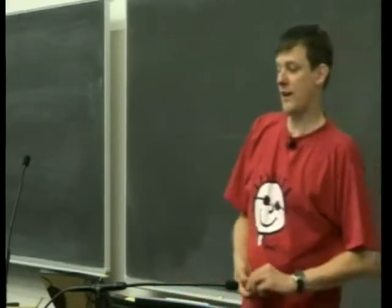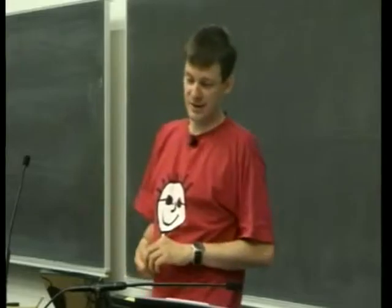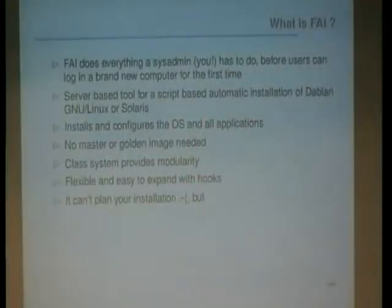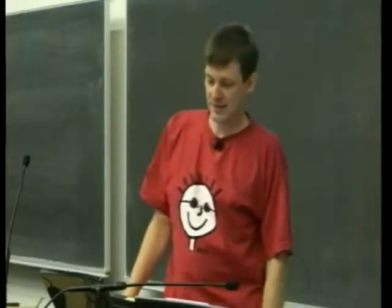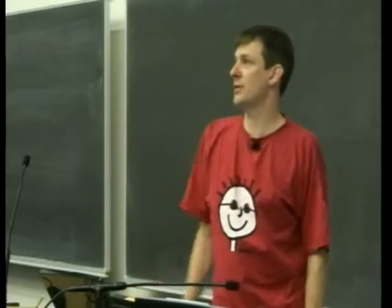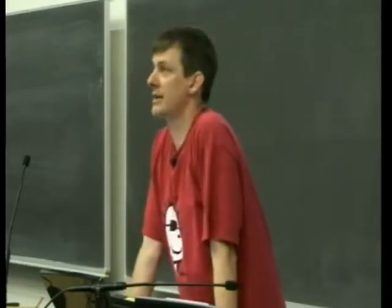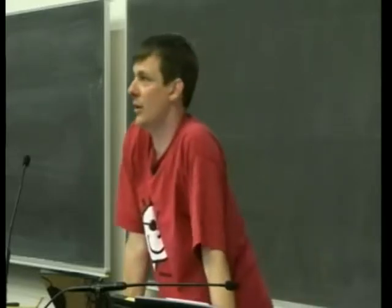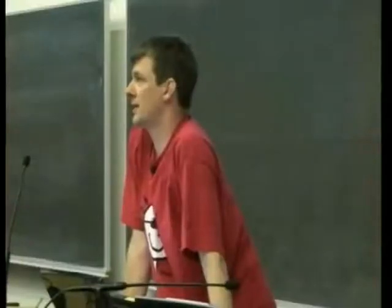What is FAI? FAI does everything a system admin has to do before a user can log into a brand new machine — everything you have to do before you can give this machine to your user and they can work with it. It's a server-based tool using scripts, so it's open source by design. We can currently install Debian GNU/Linux and also Solaris. It installs and configures the whole operating system but also all applications, so after a fully automatic installation the machine is ready to go — nothing needs to be done by hand.